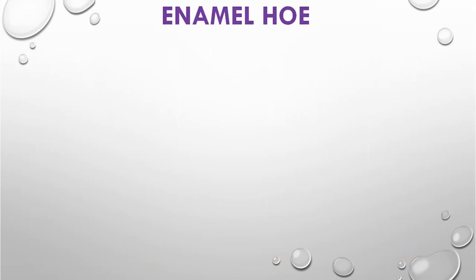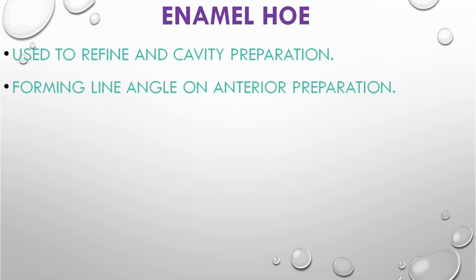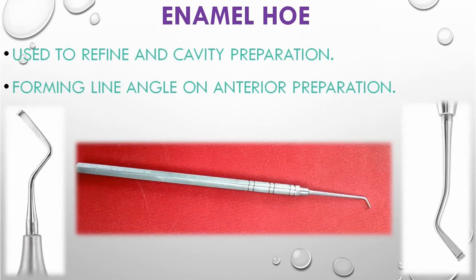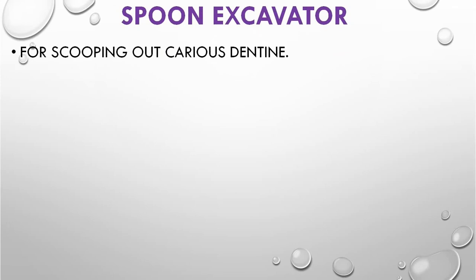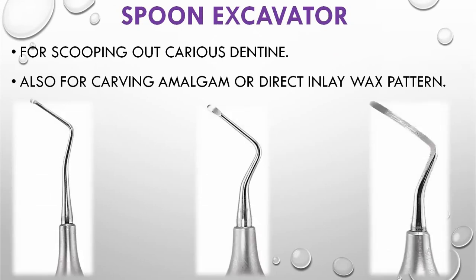The hoe excavator, also called the enamel hoe, is used to refine cavity preparation — specifically for planing cavity walls and forming line angles in Class 3 and Class 5 cavity preparations for direct filling gold restoration. The spoon excavator is a cutting instrument with a cutting edge resembling a spoon. Its curved blade makes it a lateral cutting instrument used for scraping out soft caries lesions and for carving amalgam or direct inlay wax patterns.